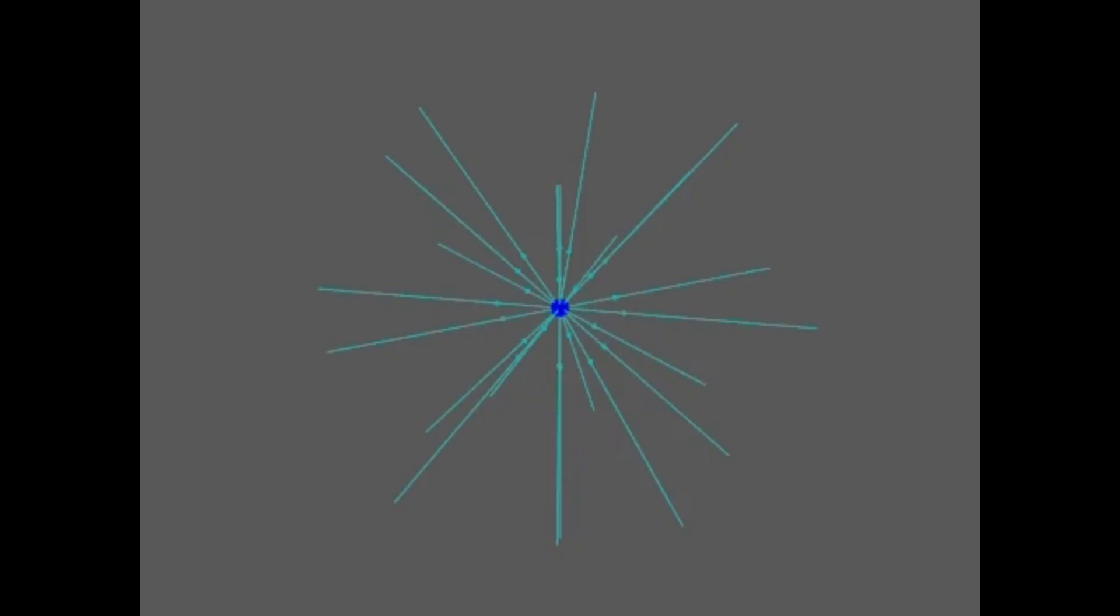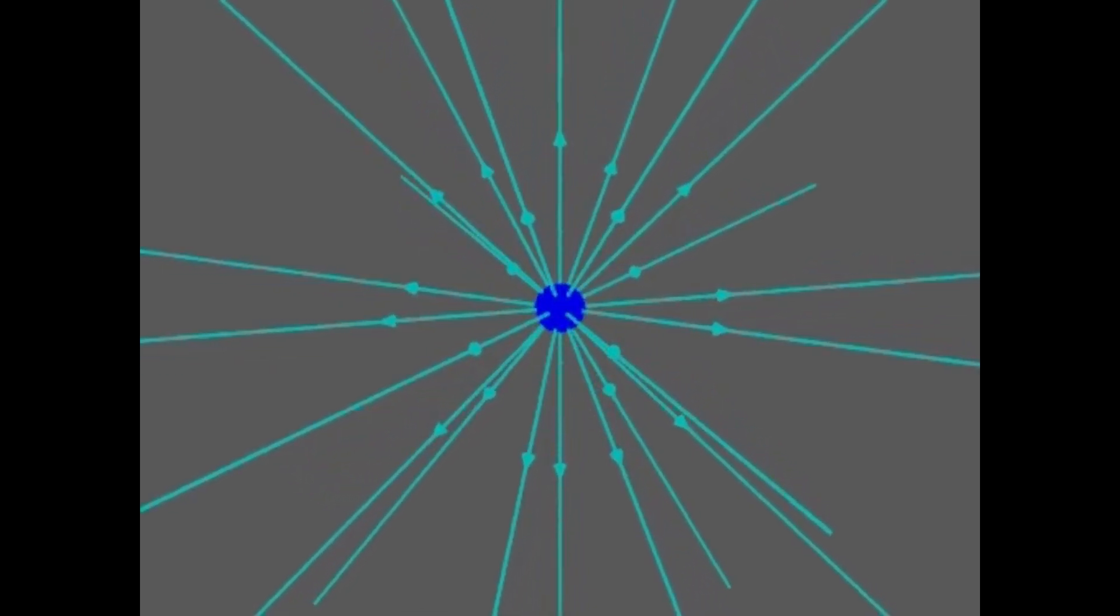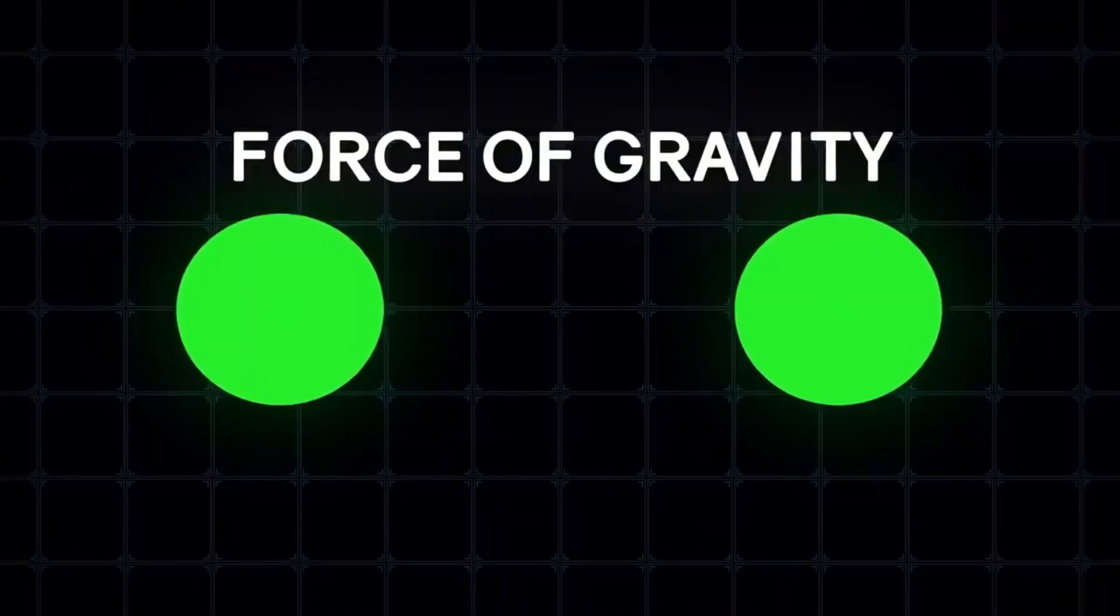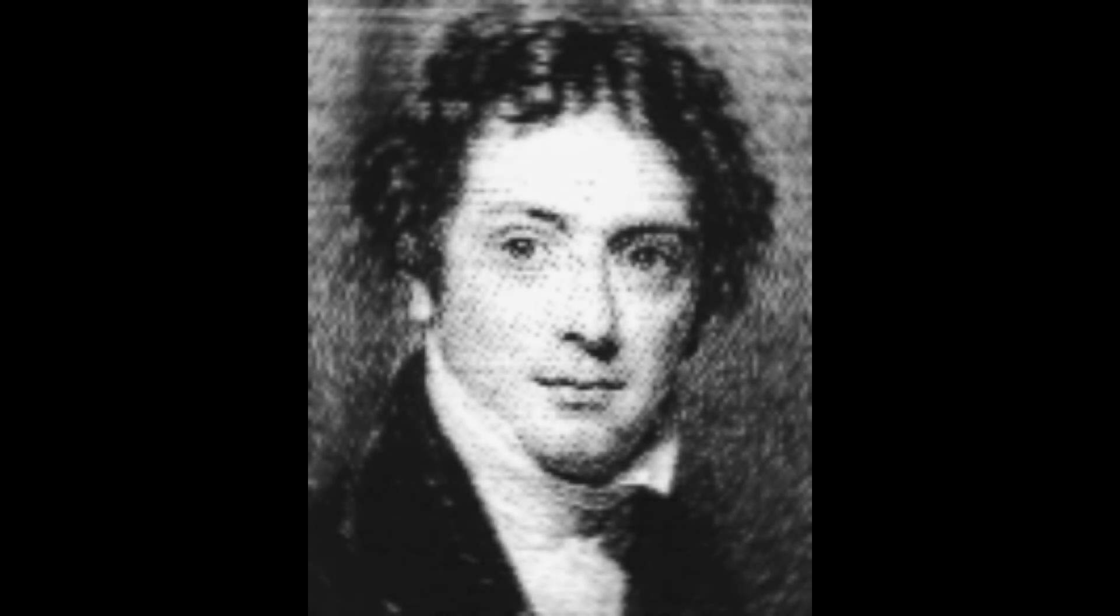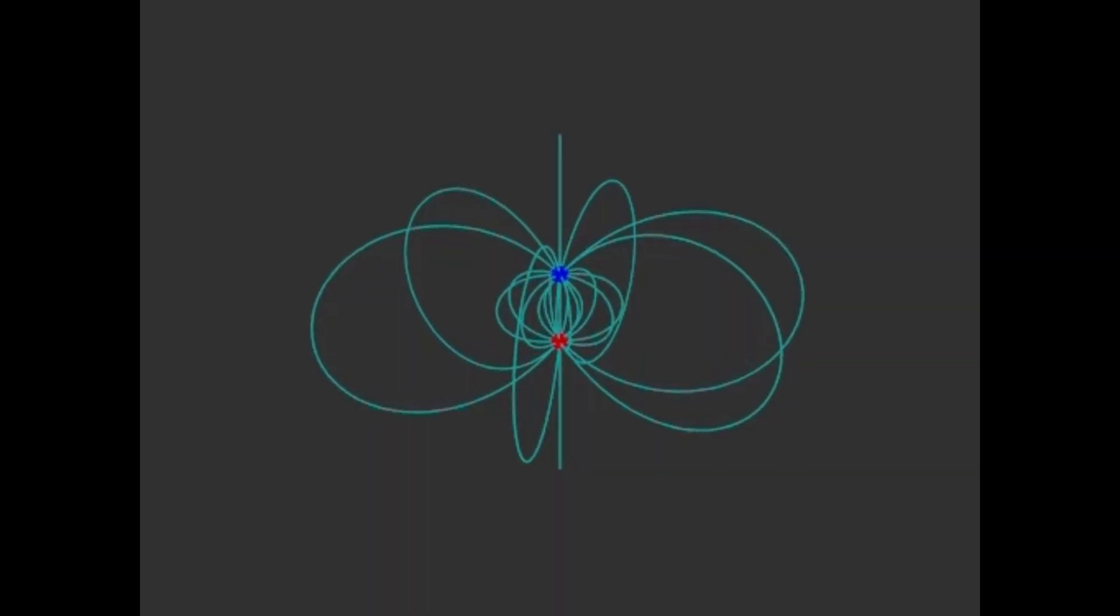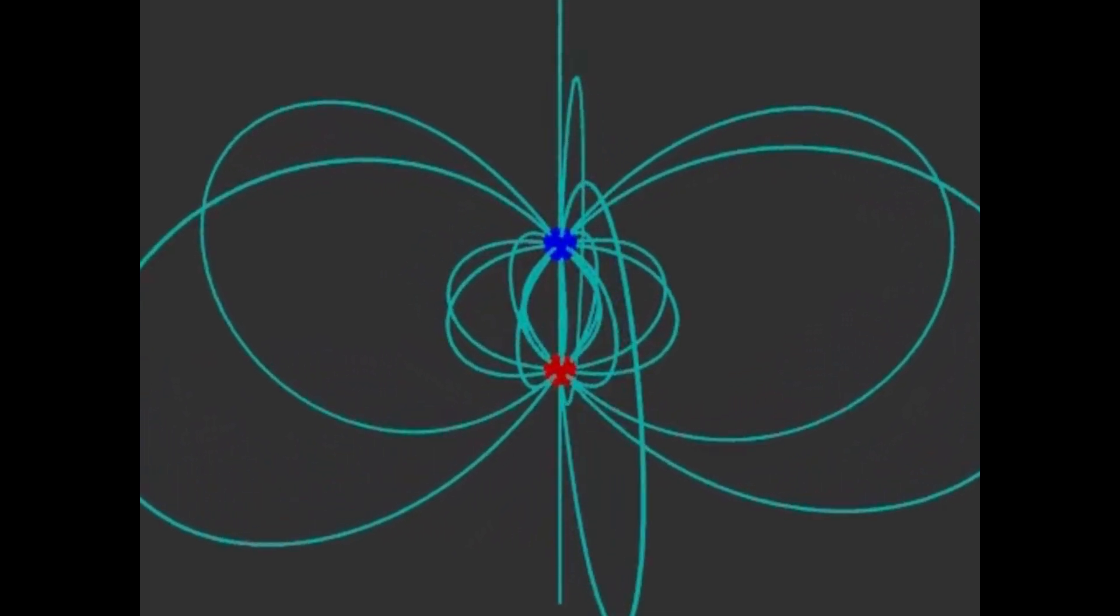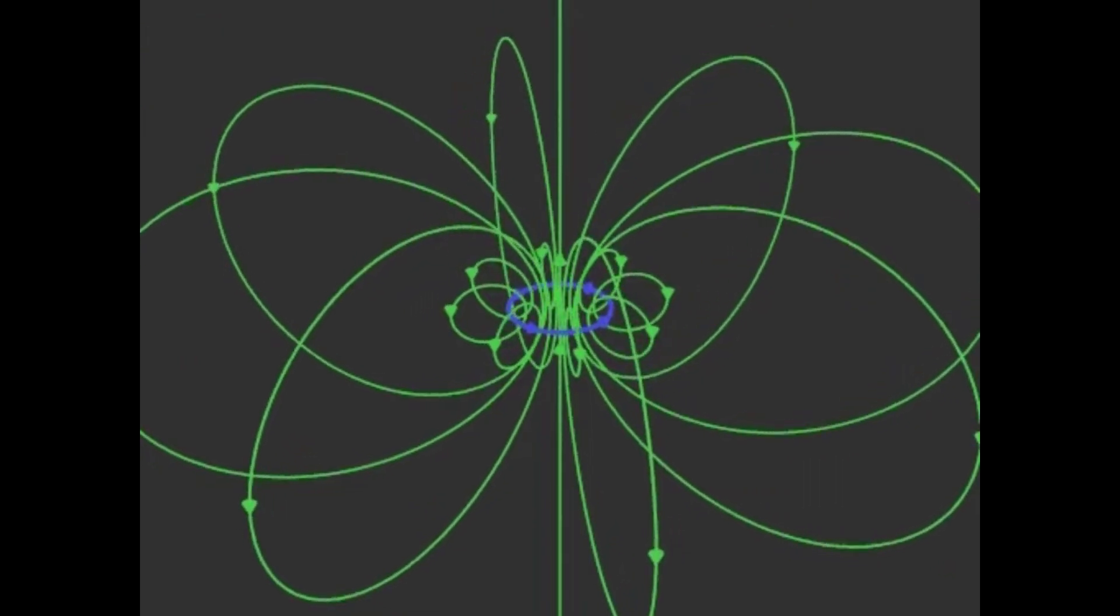The idea of fields began as a mystery. How can one object affect another across empty space? Isaac Newton said gravity acted instantly at a distance, but that didn't explain how. Then came Michael Faraday. He imagined invisible lines stretching out from electric charges and magnets. Lines of force that filled space. They were the earliest field lines.